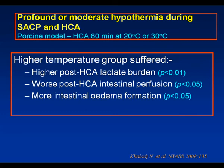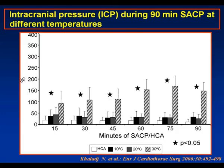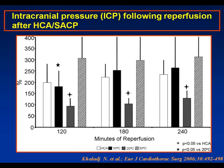Another reason why higher temperatures may be disadvantageous is their apparent effect on intracranial pressure. Comparing three SACP temperatures—10, 20, and 30 degrees centigrade—the 30-degree group had a much more profound increase in intracerebral pressure, which may be profoundly important in the generation of transient neurological deficits. This increase in intracranial pressure persisted for four hours following surgery. A corresponding fall in sagittal sinus oxygen saturation was also observed at 30 degrees.